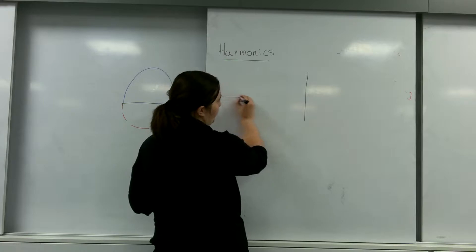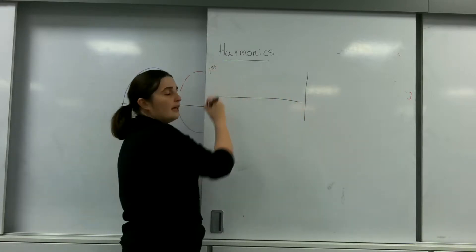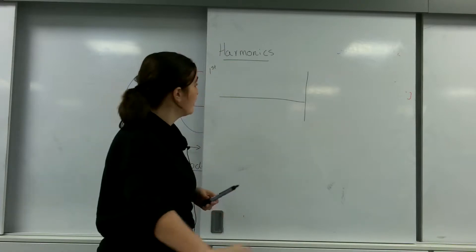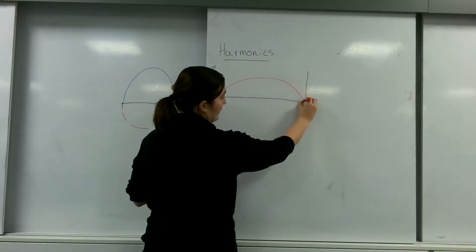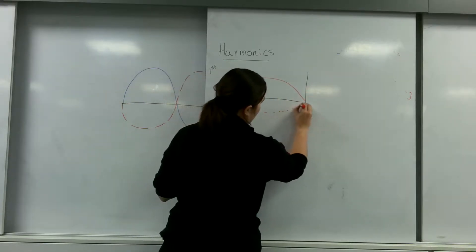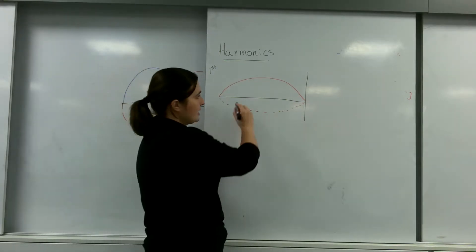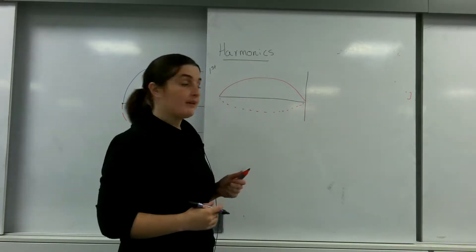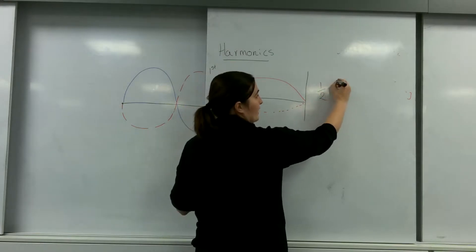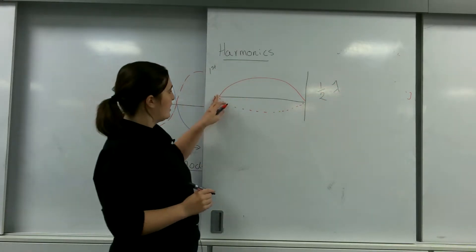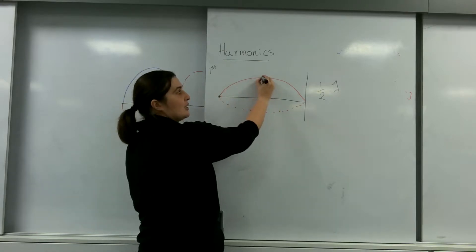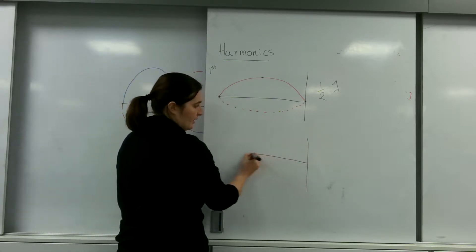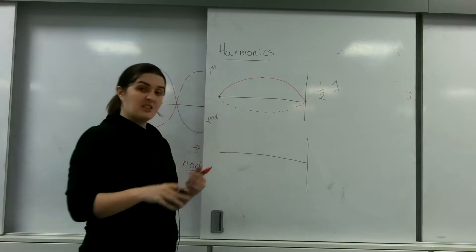The first harmonic is the first time you're able to get a node at the reflection point. As you can see, this is only half the wave, so this is only half the wavelength. And as you can see, I've got a node here, an anti-node here, and another node there.